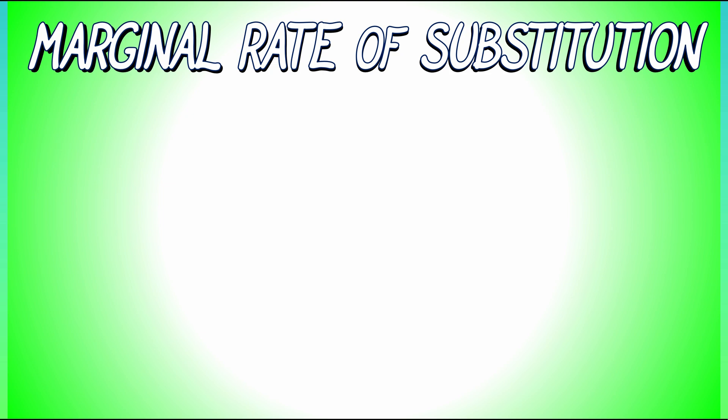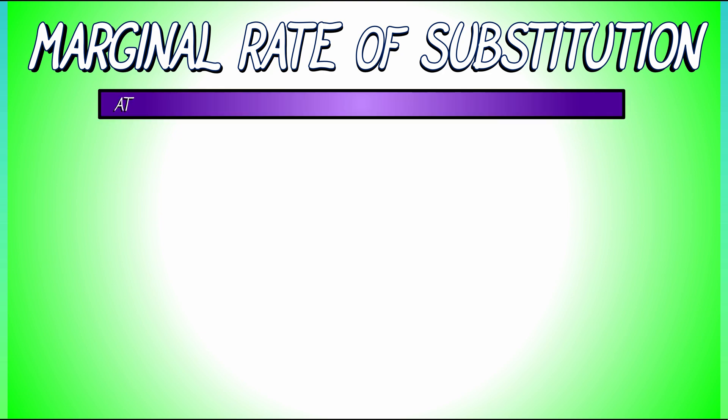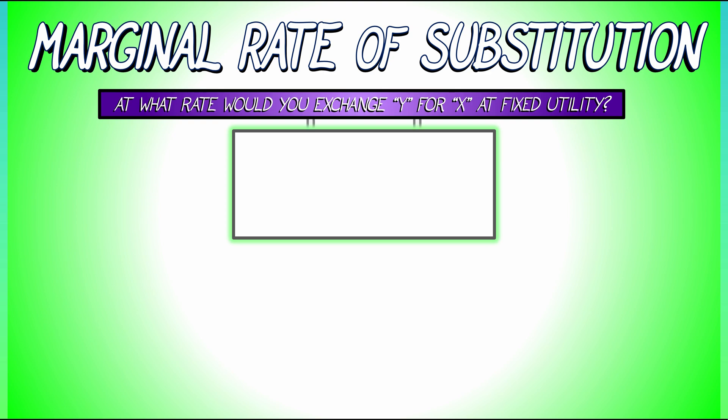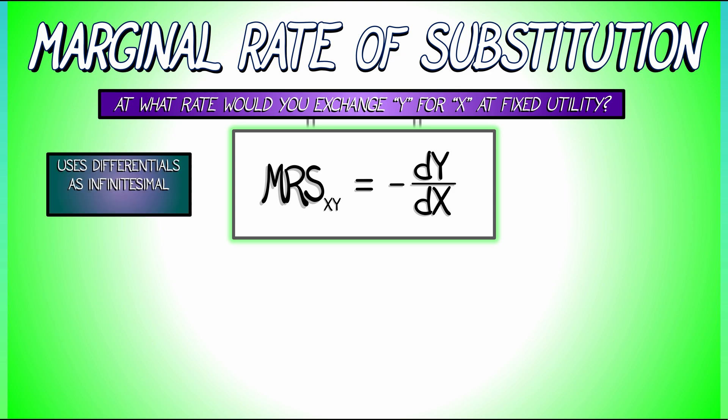And it captures the notion of trading off one commodity for another. It specifies the rate at which you would exchange Y for X at a fixed utility. The marginal rate of substitution, MRS_XY, is defined to be minus dY divided by dX, where I'm thinking in terms of differentials as infinitesimal changes.